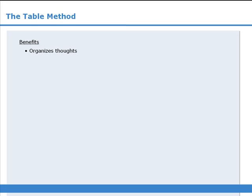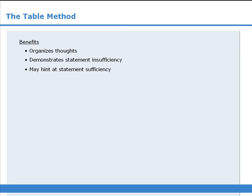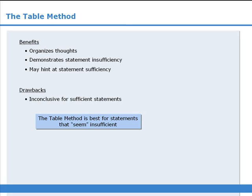So that was the table method. This technique has several benefits: it can help organize your thoughts, it can clearly demonstrate the insufficiency of a statement, and it may hint at the sufficiency of a statement. The primary drawback is that the results are inconclusive for statements that are sufficient. As such, the table method is best applied when you suspect that a statement may be insufficient.